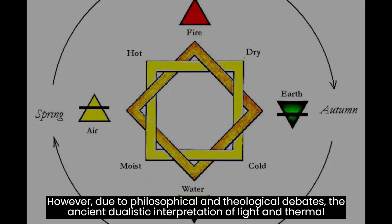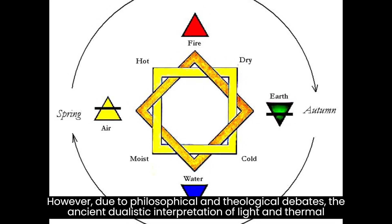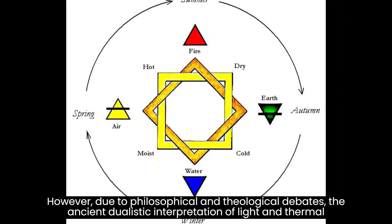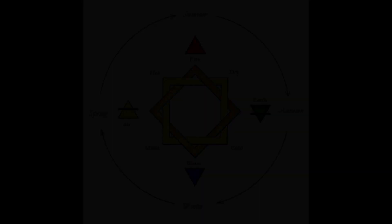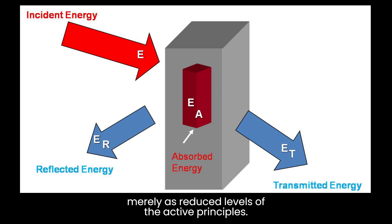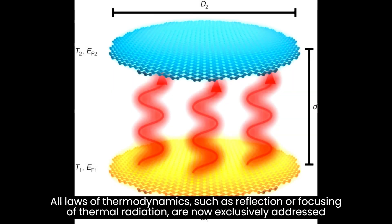However, due to philosophical and theological debates, the ancient dualistic interpretation of light and thermal phenomena was subsequently abandoned. Hence, today, light and heat are considered active and real phenomena, while darkness and coldness are viewed merely as reduced levels of the active principles.